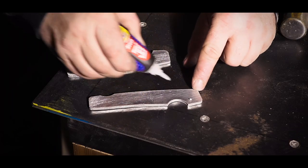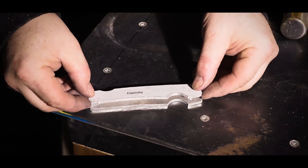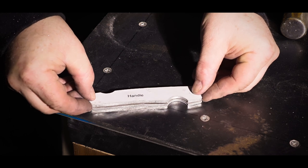I'm gluing the two handle scales together so that I can machine them both at the same time and they'll be exactly the same—the holes will be in the same place.